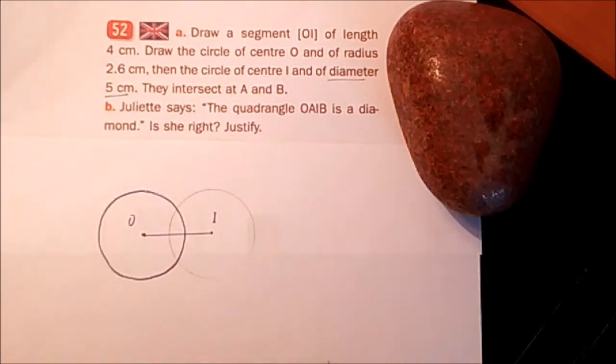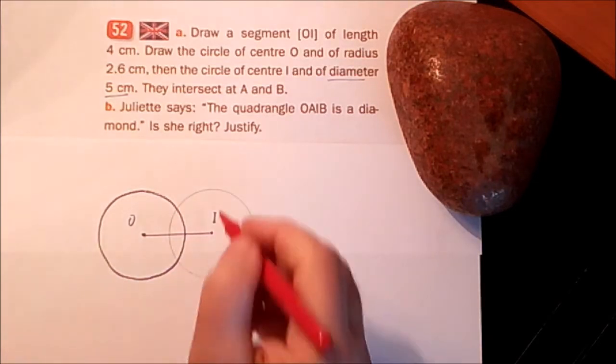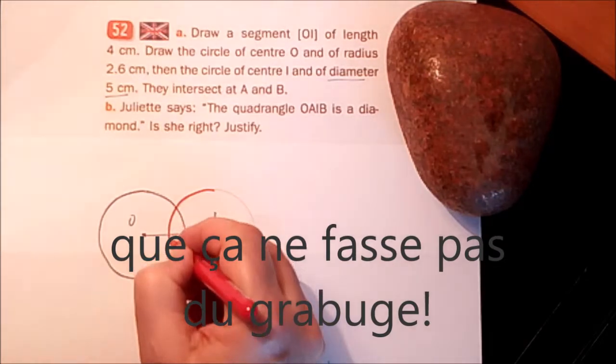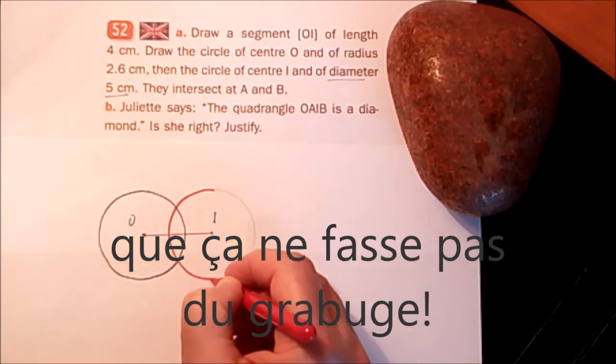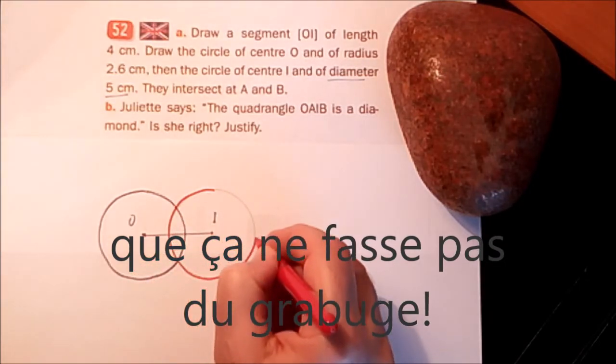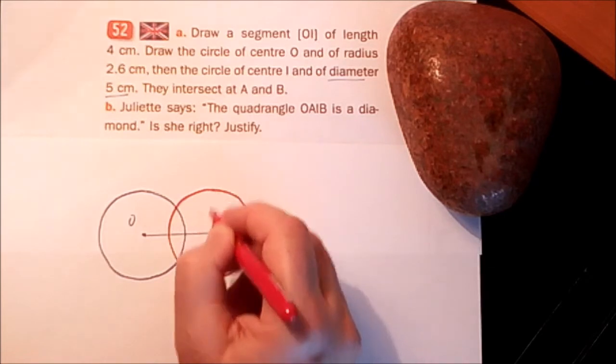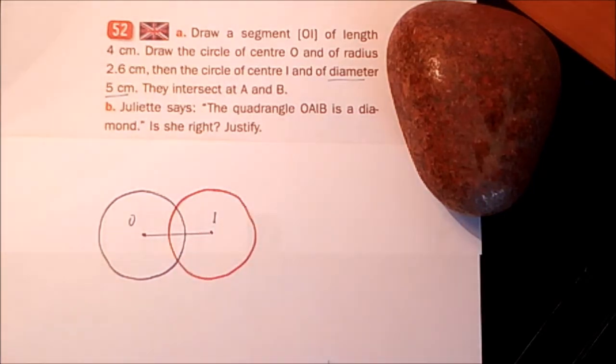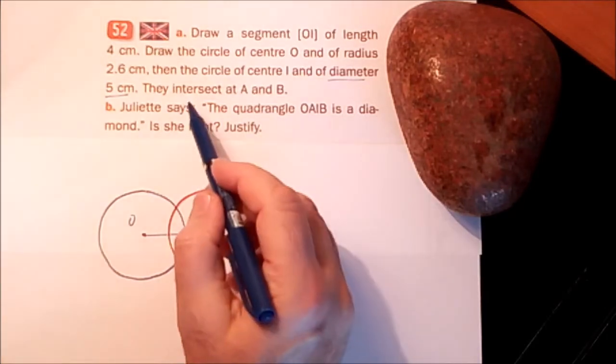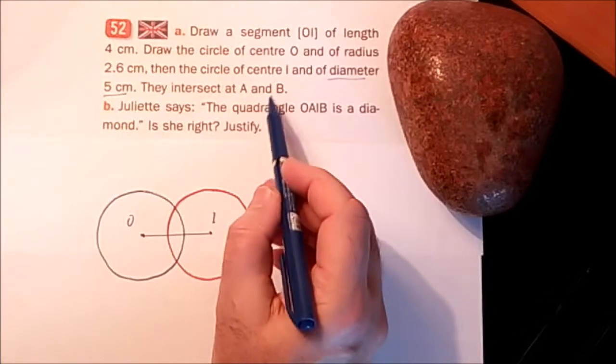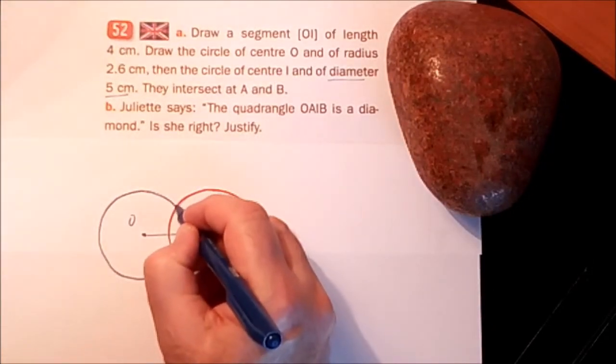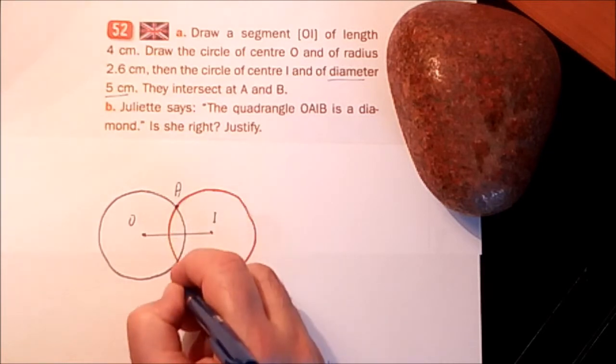Allez, on le trace en rouge que ça fasse pas du grabuge, Julie, expression que j'adore. Je la trace en rouge que ça fasse pas du grabuge. Bien. They intersect at A and B. Ils se coupent en A et en B.